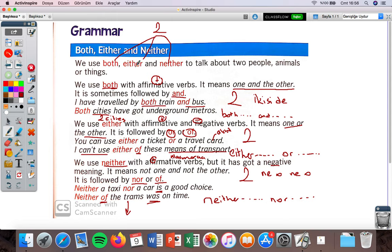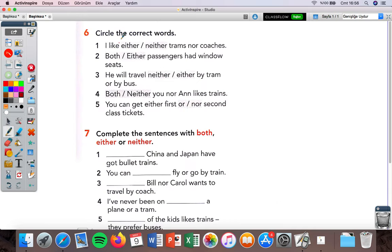Both, either, neither - all three talk about two things. Both means both of them, either means this or that one, neither means not this one nor that one. Now exercise six: circle the correct words. So I will write my topics here: both and, either or, neither nor. If I write it like this, it will make things easier for me. Let's look at number one: I like either or neither trams nor coaches.